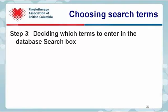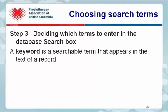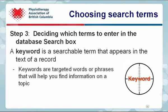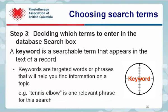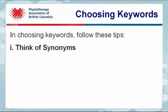Step 3 is deciding which terms to enter in the database search box. A keyword is a searchable term that appears in the text of a record. Keywords are targeted words or phrases that will help you find information on a topic. For example, tennis elbow is one relevant phrase for this search question. In choosing keywords, follow these tips.